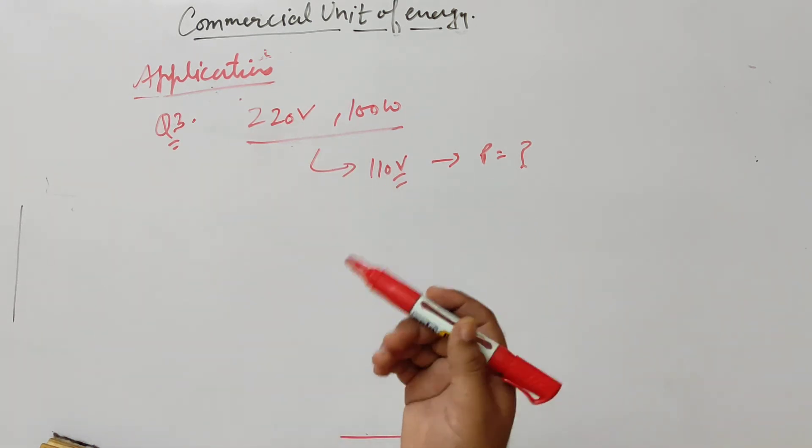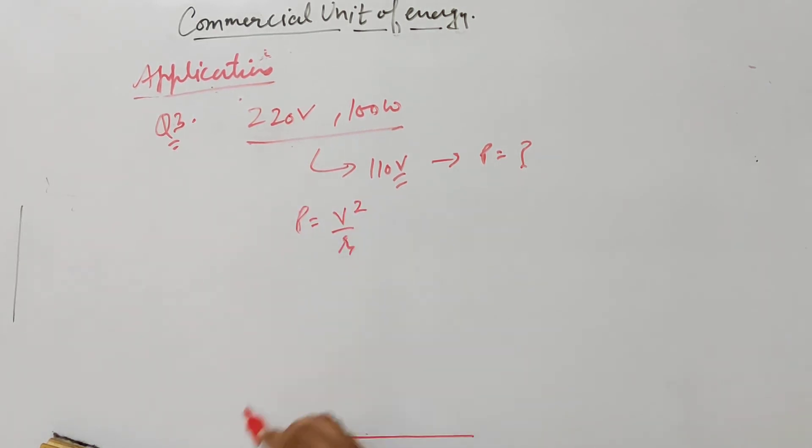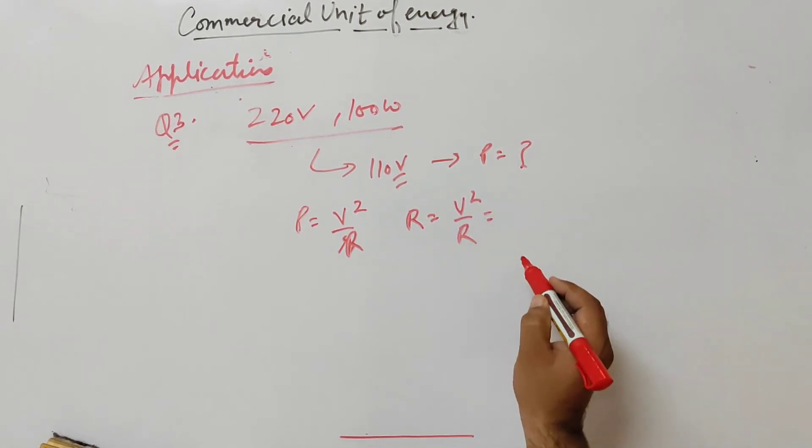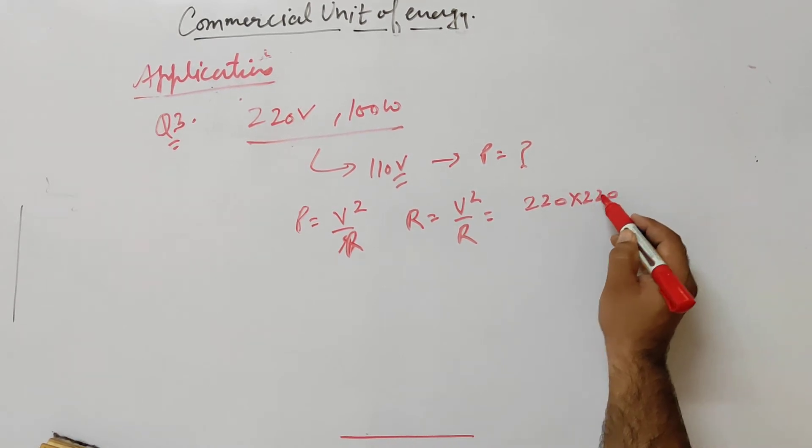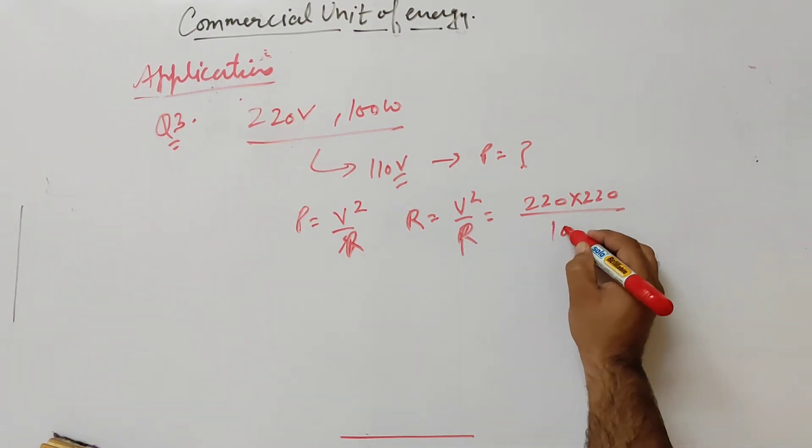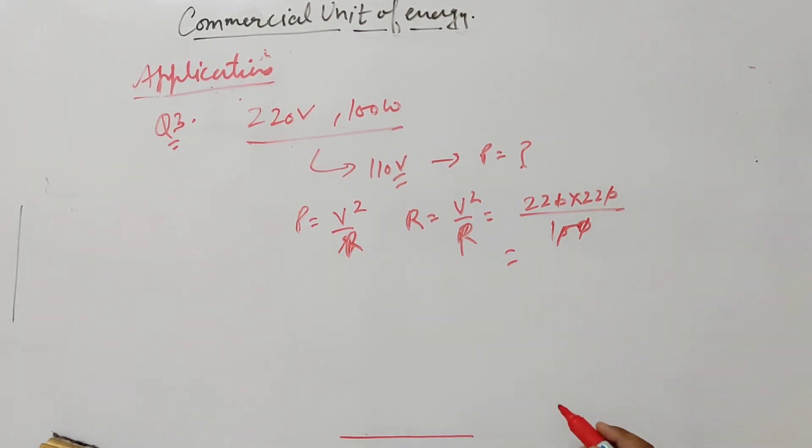First we'll find the resistance using the formula P equals V squared by R. V squared is 220 square by R, and P is 100 watts. So R equals 220 squared upon 100, which is 484 ohm.